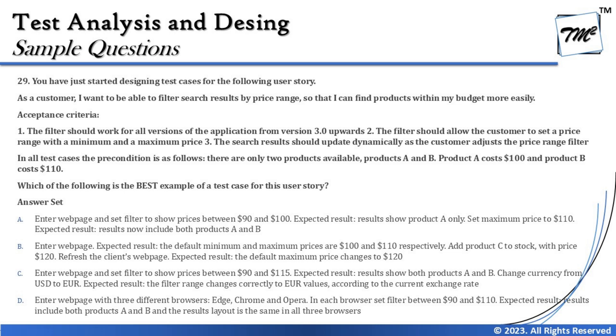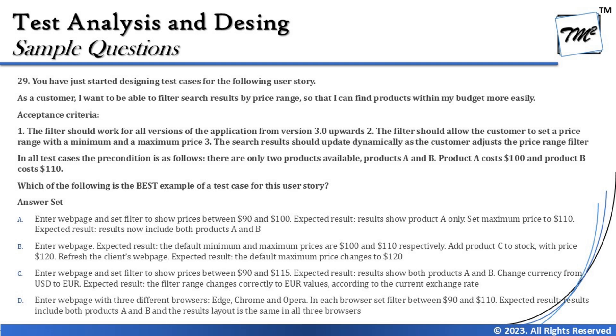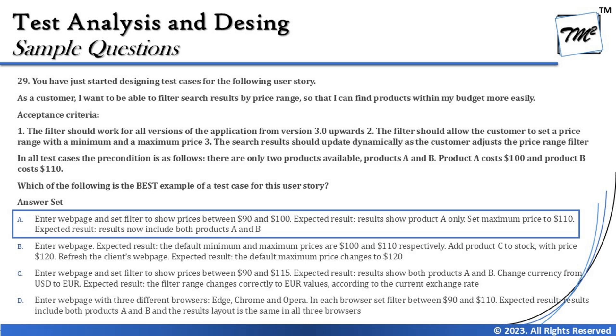Option D says: enter the web page with three different browsers — Edge, Chrome, and Opera — and in each browser set filter between 90 to 100; expected result includes both products A and B with the same layout across browsers. This is cross-browser compatibility testing, which is not mentioned in the story or acceptance criteria, so it's not within scope. The right answer is A: set filter to 90–100 showing only Product A, then slide maximum to 110 showing both Product A and B.